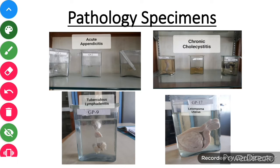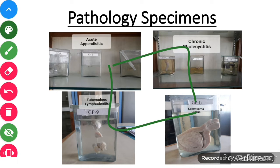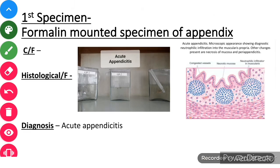Hello Second Years, I hope you all are doing fine. In this video, I will go through pathology specimens with you. These four are the most important specimens which can appear on the final viva table, plus you can also be given them as a spot in the exam.